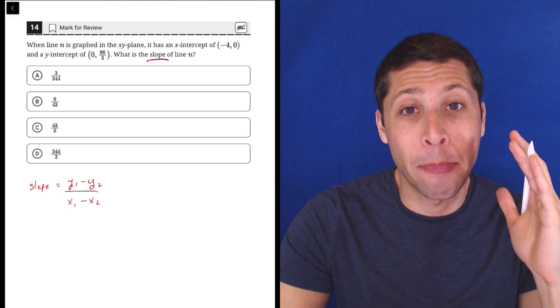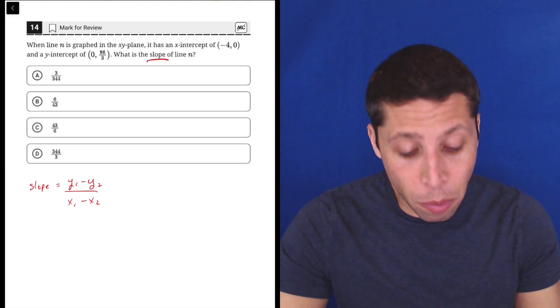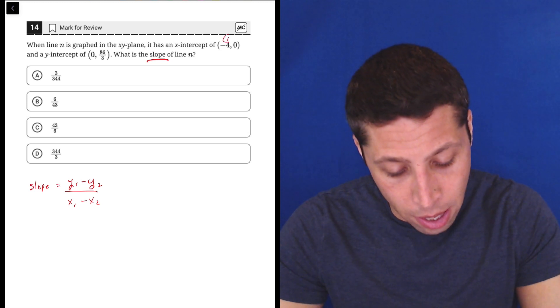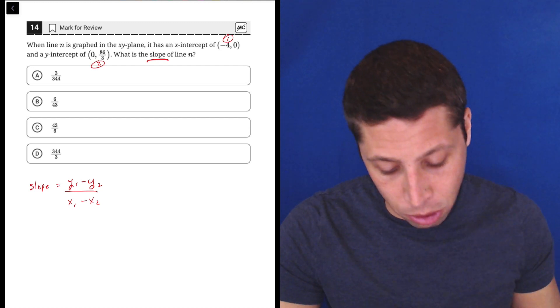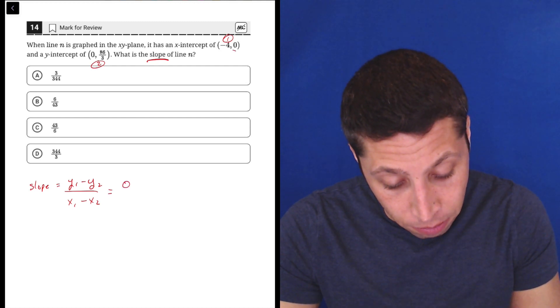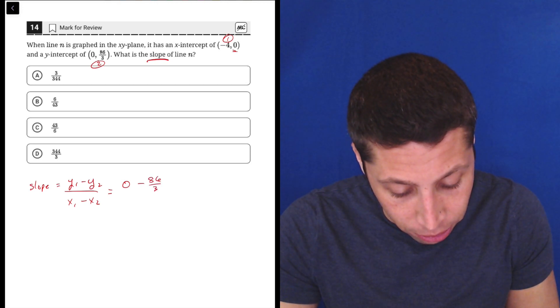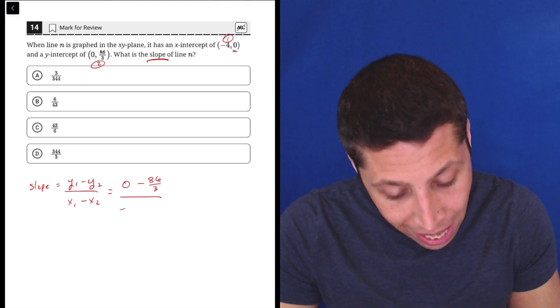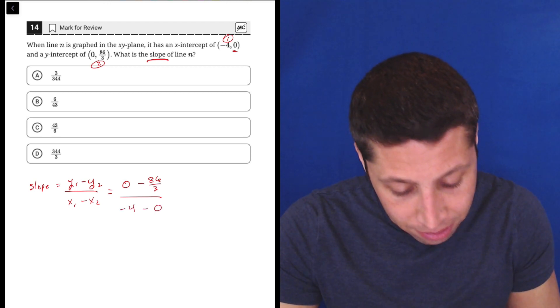Same thing with the second one. Second on the top, second on the bottom. So let's just go in the order that they give it to us. So let's do this as point 1, this is point 2. So we would have the y's on top. So 0 is the first y and then minus 86 thirds over, now the first x, negative 4 minus 0.